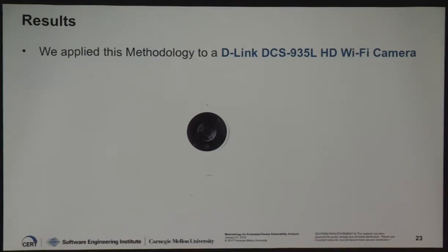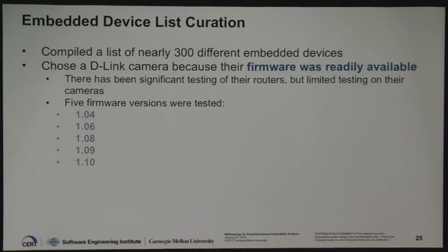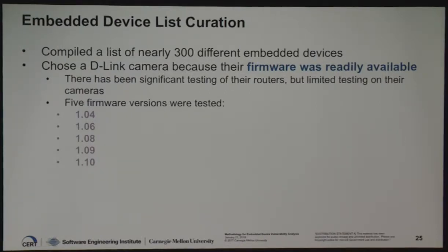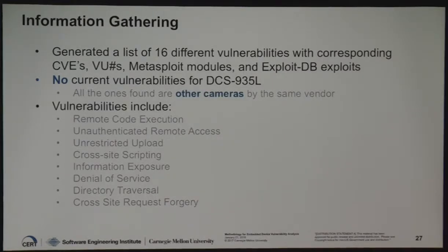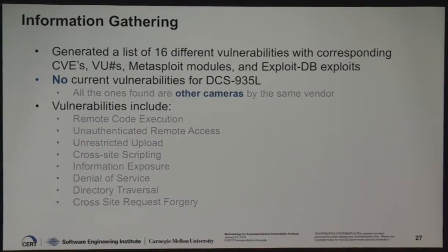We applied the methodology to a D-Link DCS935HD WiFi camera. We compiled a list of nearly 300 different embedded devices and chose D-Link because their firmware was readily available — you can download firmware for any of their embedded devices online, free, and all versions are available. We tested five different firmware versions: 1.04, 1.06, 1.08, 1.09, and 1.10. We found 16 different vulnerabilities corresponding with CVEs, Metasploit modules, and ExploitDB exploits — though there were no current vulnerabilities specifically for that camera model. Vulnerabilities we decided to test from similar cameras included remote code execution, cross-site scripting, denial of service, and directory traversal.